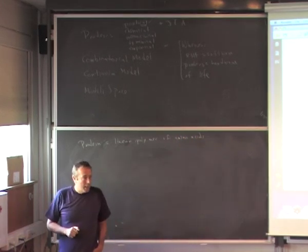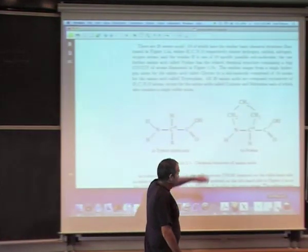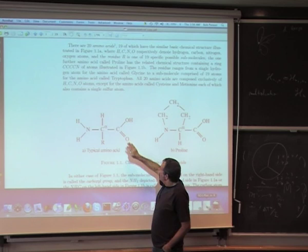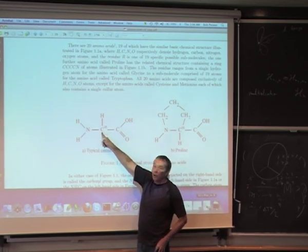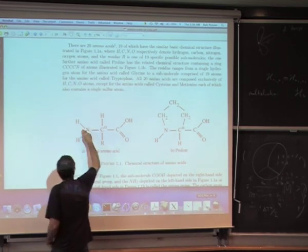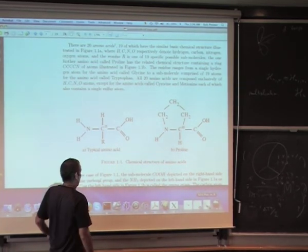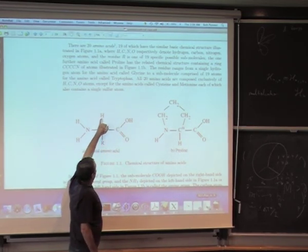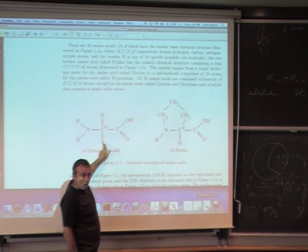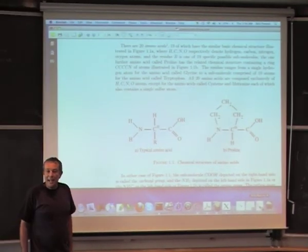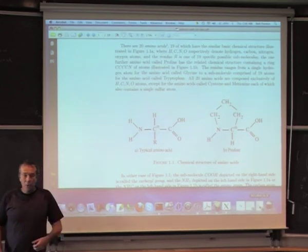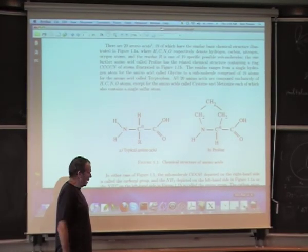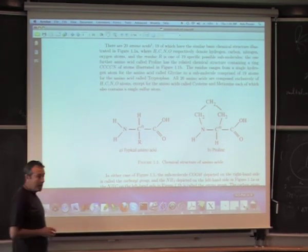So what is an amino acid? An amino acid is a particular chemical compound, and the cases we're interested in are illustrated here. Almost all of them have the same basic chemical structure. C alpha means a central carbon atom called the C alpha. There's a nitrogen, an amide group on this side NH2, and a carboxyl group COOH on this side. This carbon is wearing a little hydrogen hat, and then there is a residue R, which ranges from just a single hydrogen atom for glycine to a rather large submolecule, including something like 19 further atoms for tryptophan.